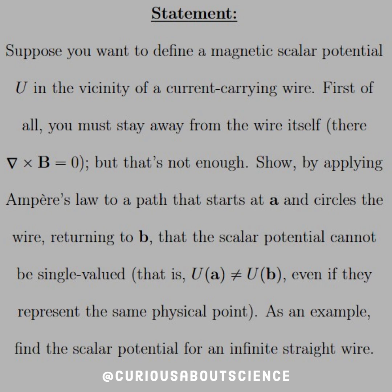The statement reads: suppose you want to define a magnetic scalar potential U in the vicinity of a current-carrying wire. First of all, you must stay away from the wire itself. There, the curl of B equals zero. But that's not enough.